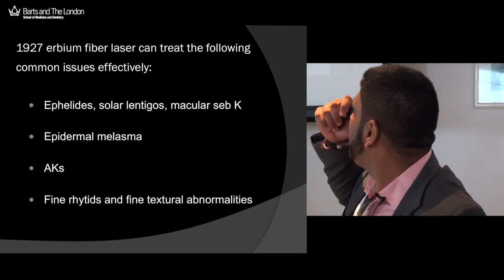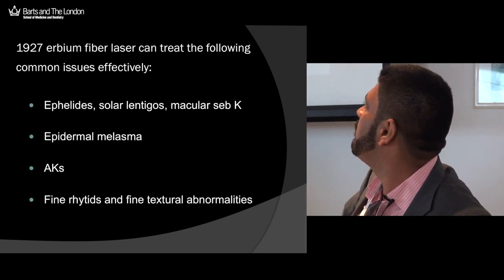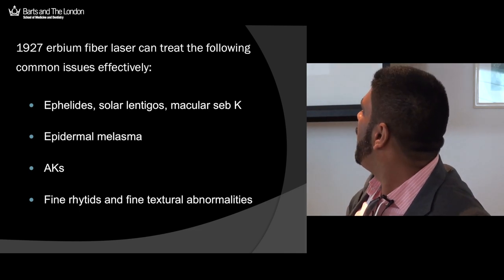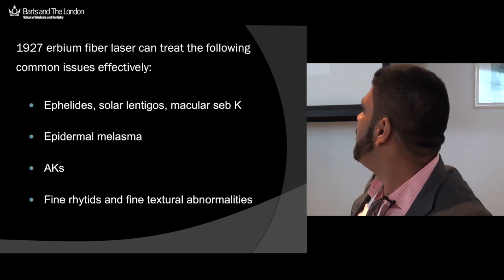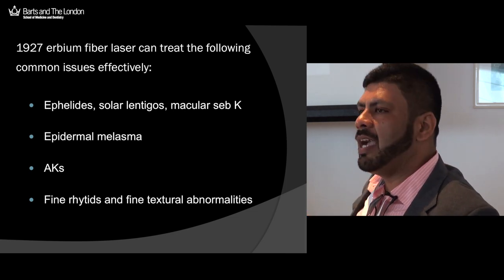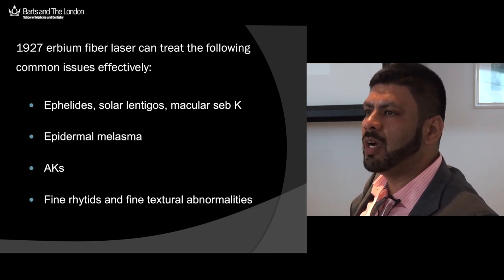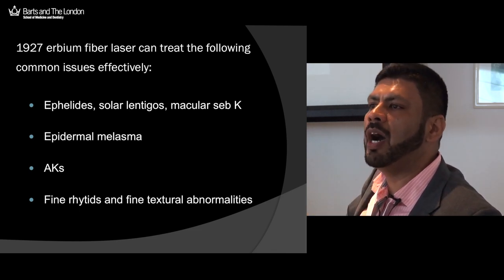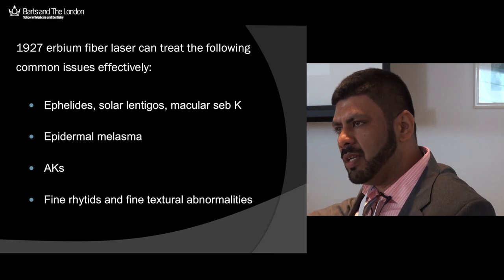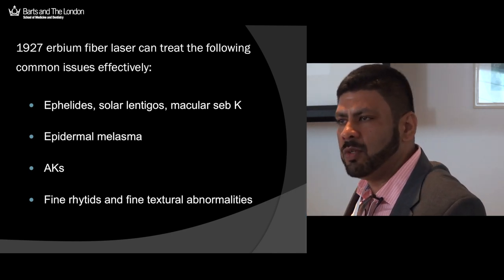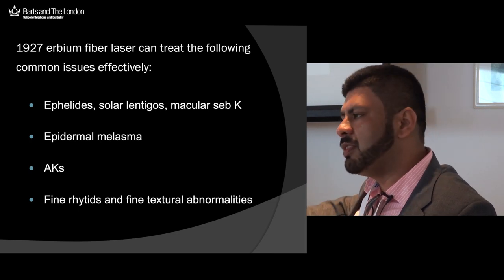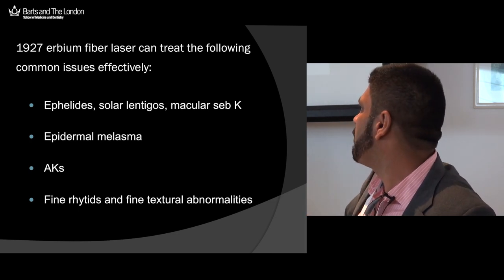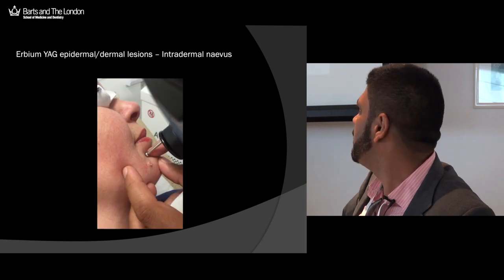With the 1927 nm erbium fiber laser, indications include freckles, solar lentigines, macular seborrhoeic keratoses, epidermal melasma, and actinic keratoses — for AKs you'd use higher density, around 80 to 100%. Because of the thermal effects, you also get improvements in fine rhytids and textural abnormalities.